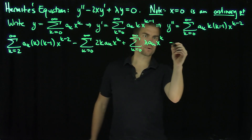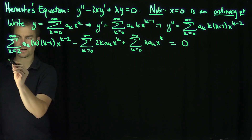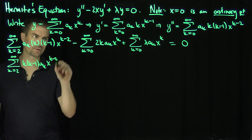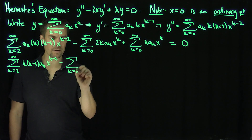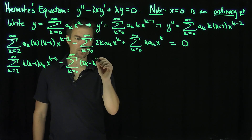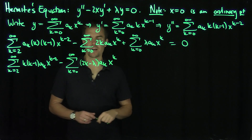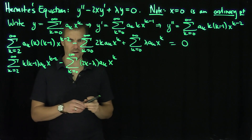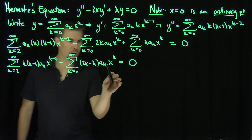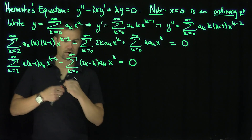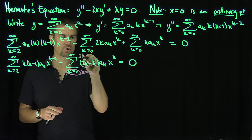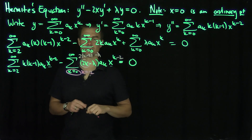Grouping the last two terms, we get the sum from k equals 2 to infinity of k times k minus 1 a_k x to the k minus 2, minus the sum from k equals 0 to infinity of (2k minus lambda) a_k x to the k, equal to 0. To add these series together, the powers must match, so I shift the second sum's index up by 2, replacing k equals 0 with k equals 2. This gives (2(k minus 2) minus lambda) and a_{k minus 2}.